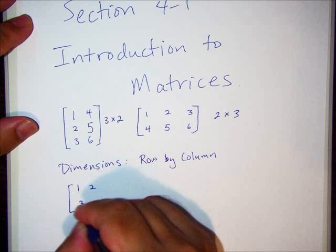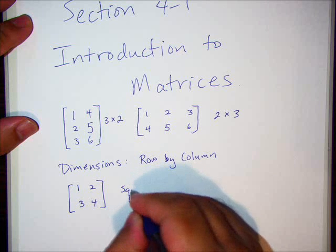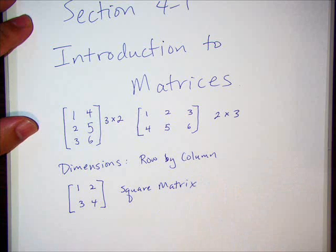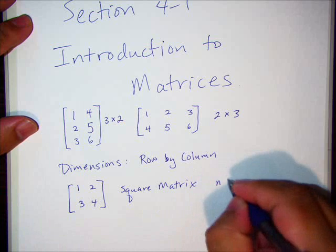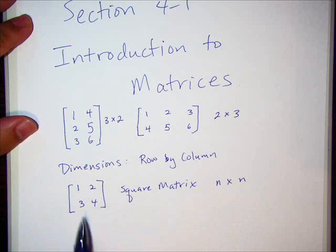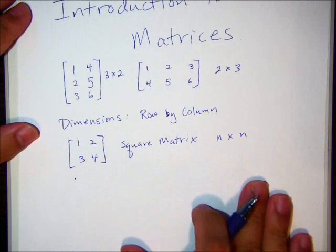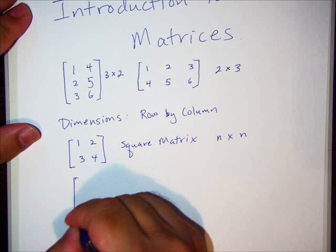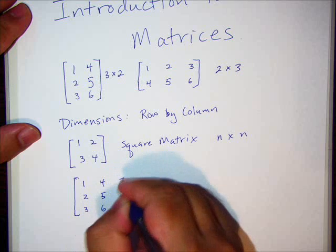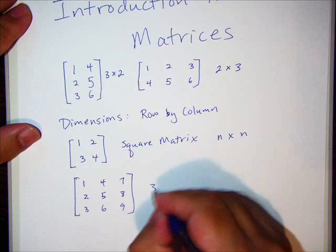We also have what are called square matrices. A square matrix is n by n, meaning the number of rows and the number of columns will be the same. So this is a square matrix, this one is a 3 by 3 square matrix.